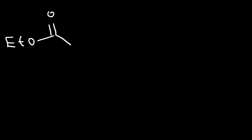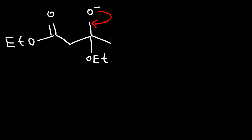Right now we have this intermediate attached to the carbonyl carbon, which now has an oxygen with a negative charge, and then here's the other methyl group and the other OEt group. In the next step, this tetrahedral intermediate will collapse. The oxygen is going to reform the pi bond, expelling the ethoxide group. Every step up to this point is reversible.